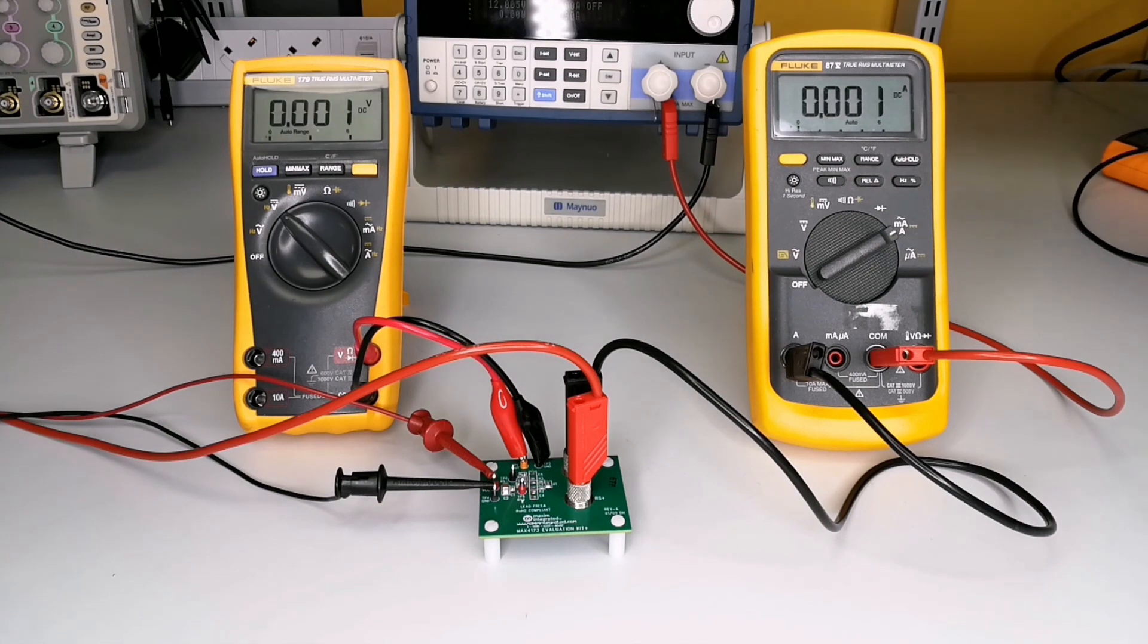If the programmable load is set to 1 amp, then the voltage at the output pin of the EV kit should be 3 volts. By using a multimeter connected across the ground pin and V out, I measured the voltage to be 3 volts, which indicates everything is working as it should. The multimeter set to the current range also confirms that precisely 1 amp is flowing through the shunt resistor.